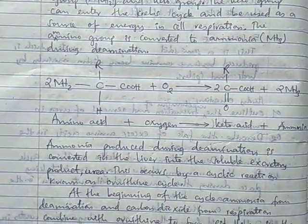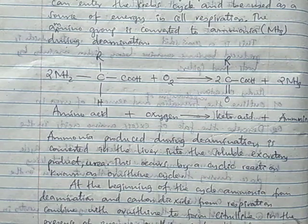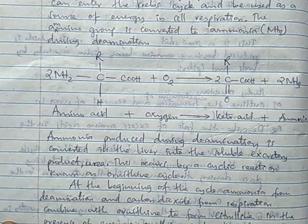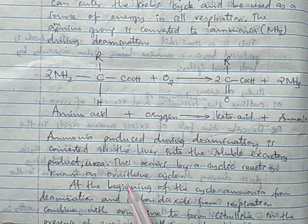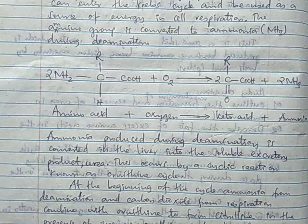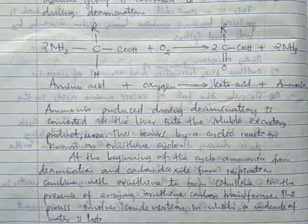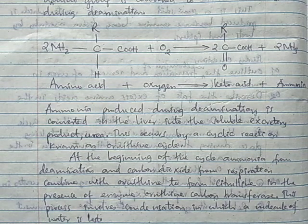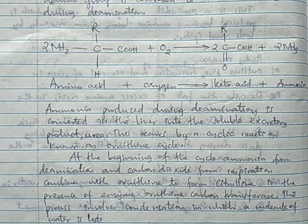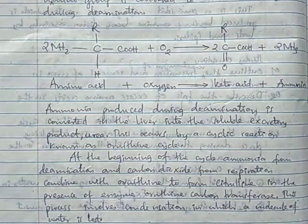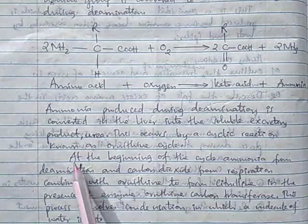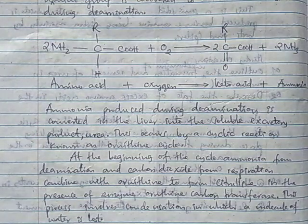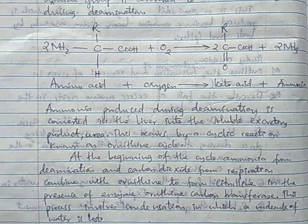That's how the reaction of deamination takes place in the liver. Ammonia produced during deamination is converted in the liver into soluble excretory product urea. This occurs by a cyclic reaction known as ornithine cycle. If you are asked to explain ornithine cycle only, you should start explaining at the beginning of the cycle.